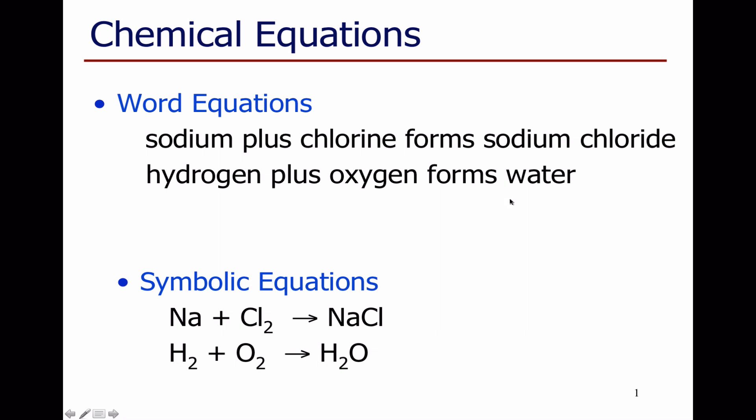But we should get into the habit of writing these things in terms of the chemical symbols, since these tell us which elements are present, how many of each element are present. So sodium plus chlorine should be written as Na plus Cl2 for chlorine, and that gives us the ionic compound NaCl.